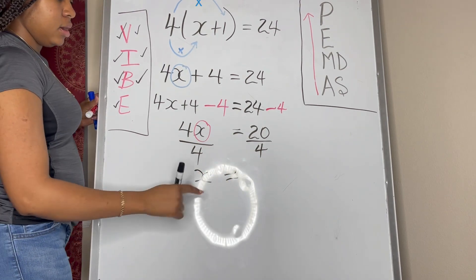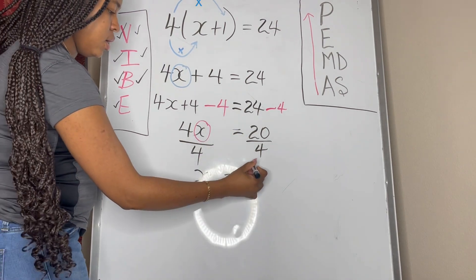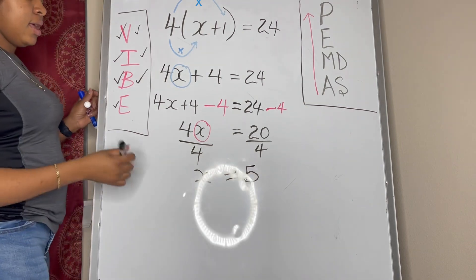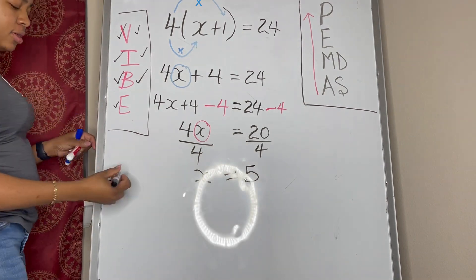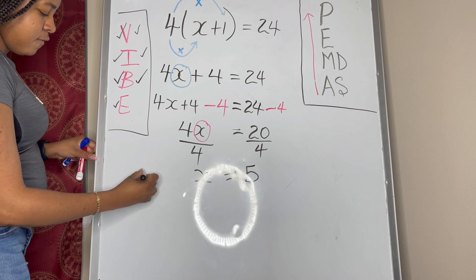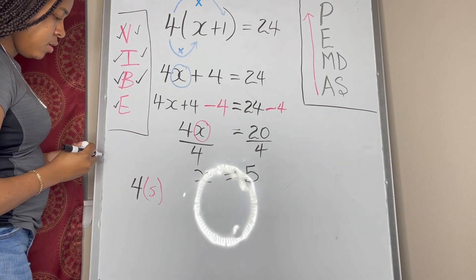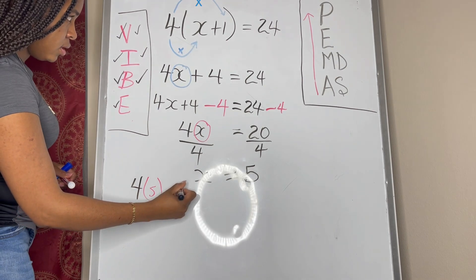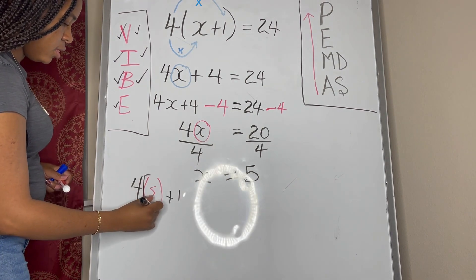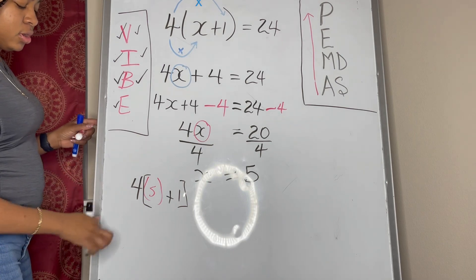And then we have 20 divided by 4 is 5. Again, you can check your answers by substitution. So we go 4 multiply by 5 plus 1 in parentheses should be equal to 24.